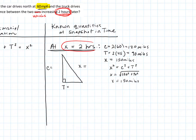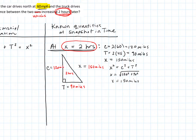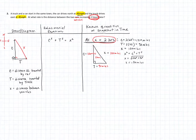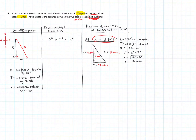At this snapshot in time — like taking a little picture of the scenario — at exactly 2 hours: X = 150 miles, C = 120 miles, T = 90 miles. We did that side work using the data given. The problem told us to look at the scenario two hours later, so we used the speeds to calculate those distances.